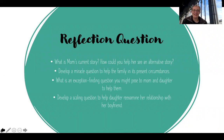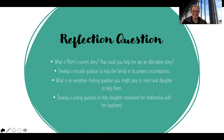The reflection questions are going to be a little different than past reflection questions. We're going to reflect on how you would apply this model. Don't answer all four — choose just one. You'll watch the clip and answer one of: what is mom's current story and how could you help her see an alternative story through reframing or exception finding? Develop a miracle question to help the family in its present circumstances. What is an exception-finding question you might pose to mom and daughter to help them? Or develop a scaling question to help the daughter re-examine her relationship with her boyfriend.